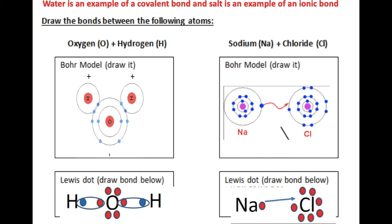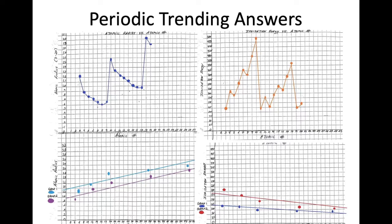I gave you this question asking which is ionic and which is covalent. Water is an example of a covalent bond where you can actively see electrons being shared in the diagram. Versus salt — chlorine, which has a higher ionization energy, steals an electron away from sodium to create an ionic bond. Then you did a periodic trending activity where you built graphs and also built a model of atomic size.